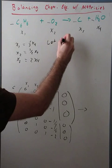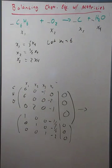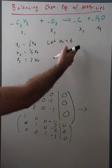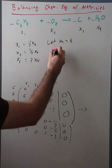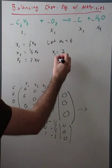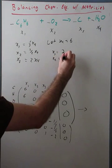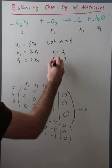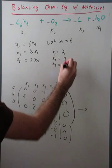So if we let x4 equal 6, then we plug that in everything. And we get x1 is equal to two, x2 is equal to three, and x3 is equal to 12.